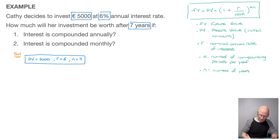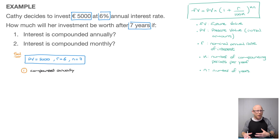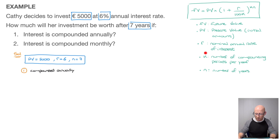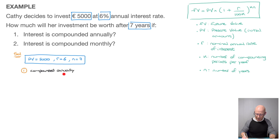Now we're ready to answer each question. For question one, interest is compounded annually, meaning we only earn interest on our investment once per year. In the context of our formula, that tells us K — the number of compounding periods per year — equals 1.